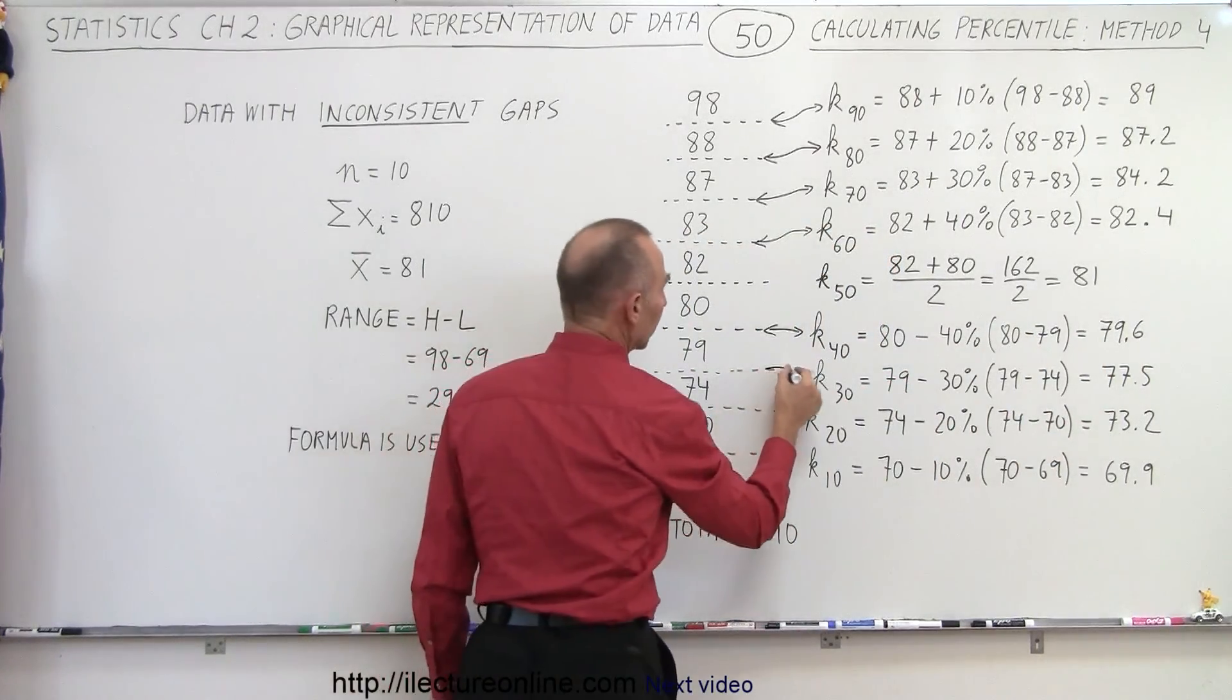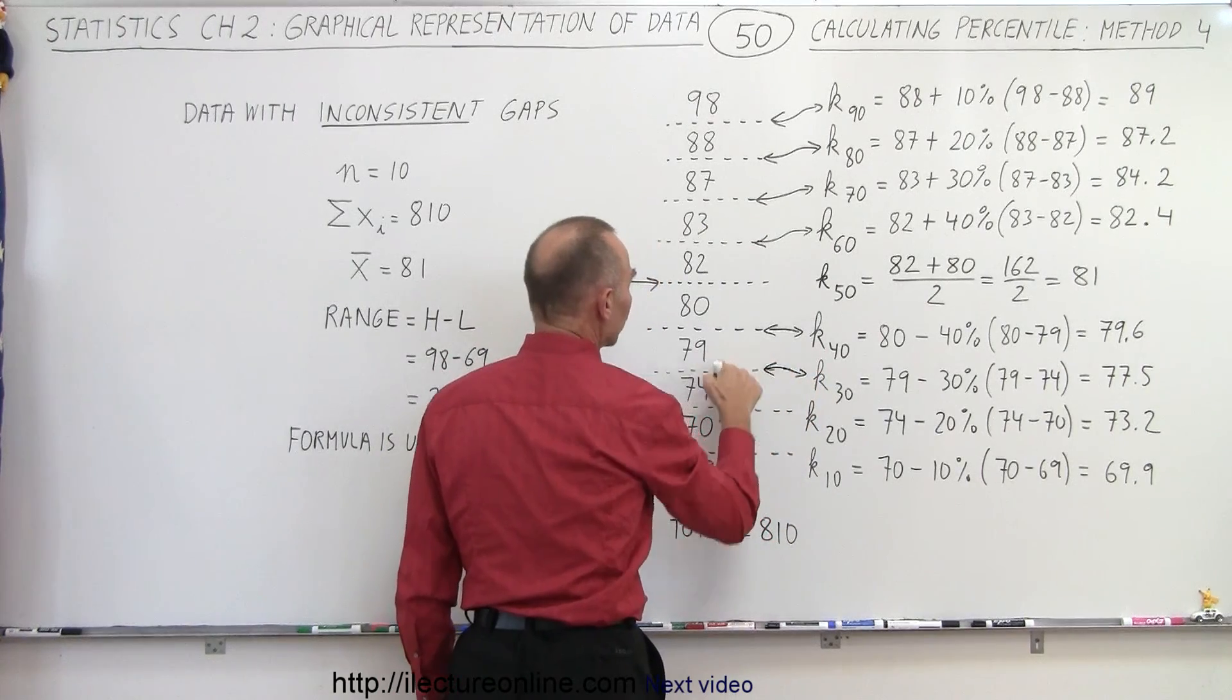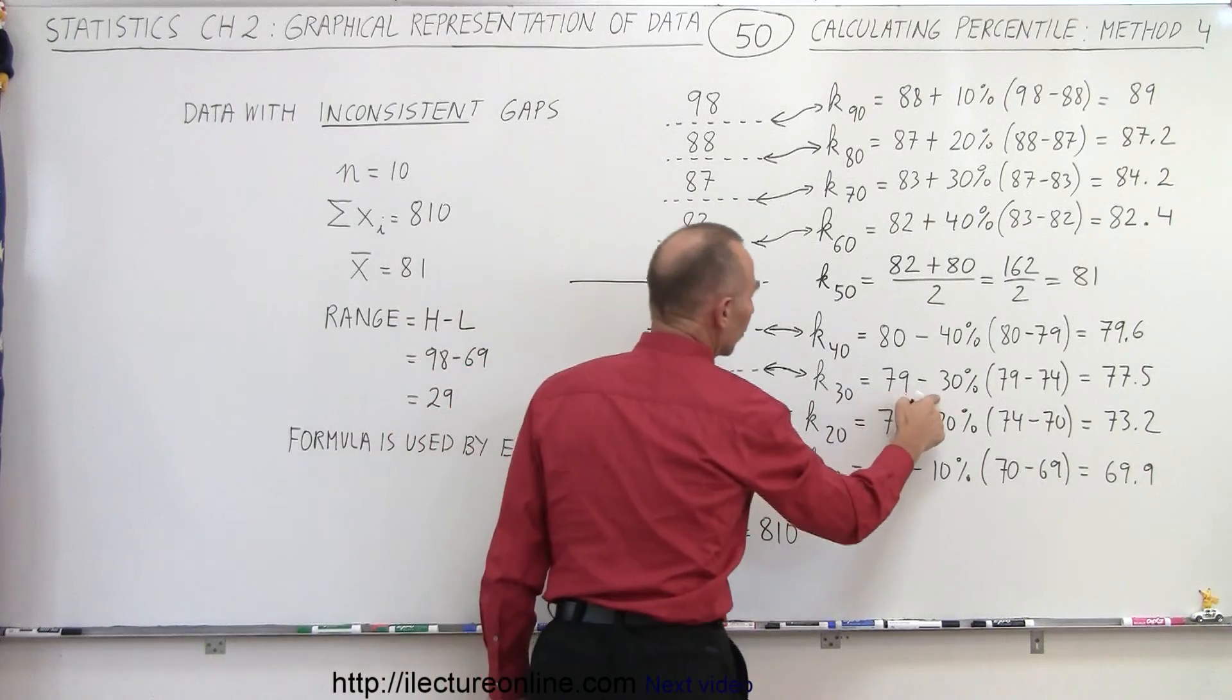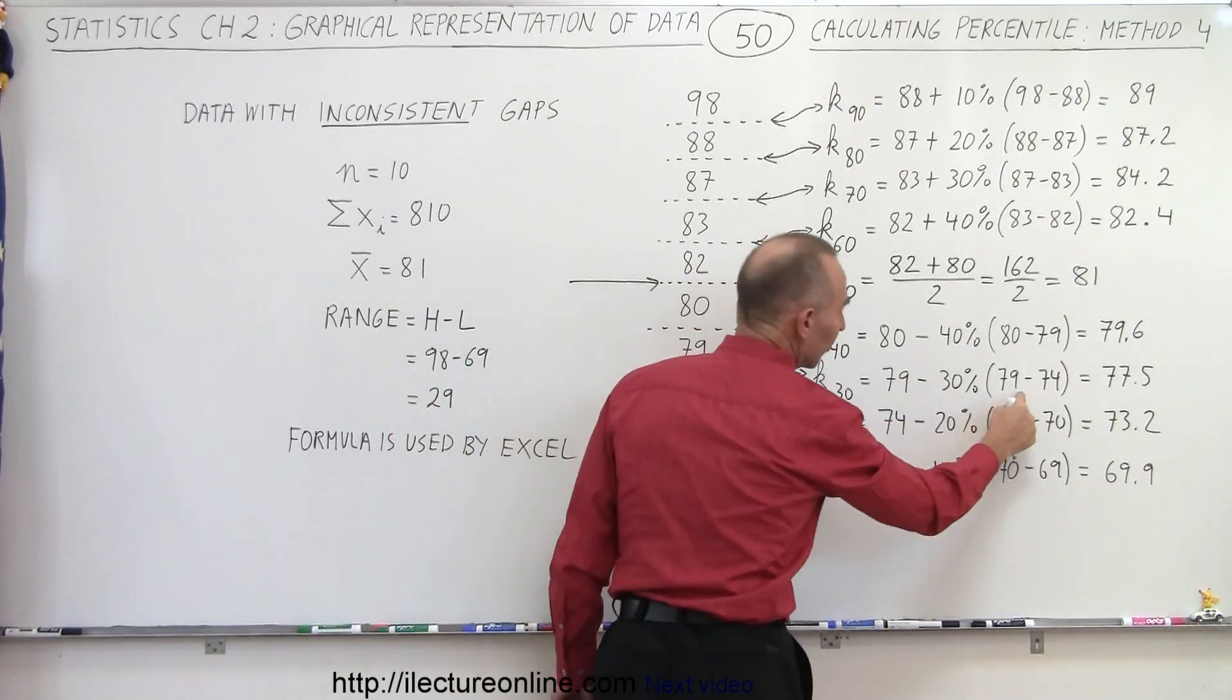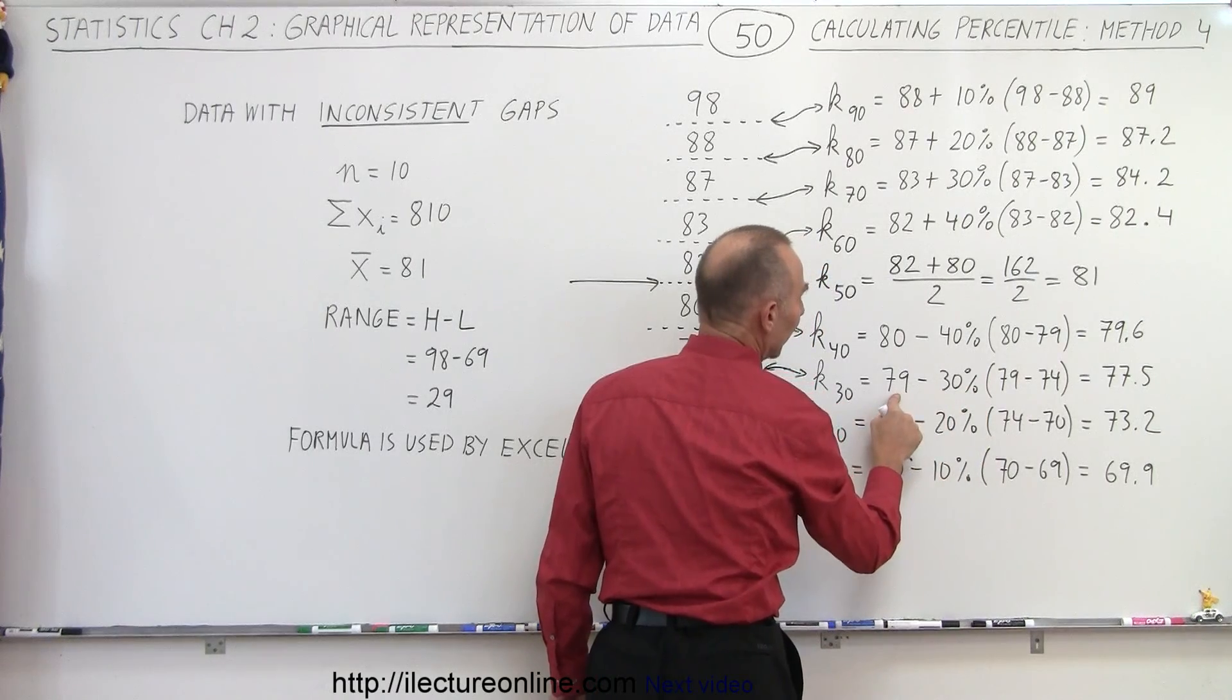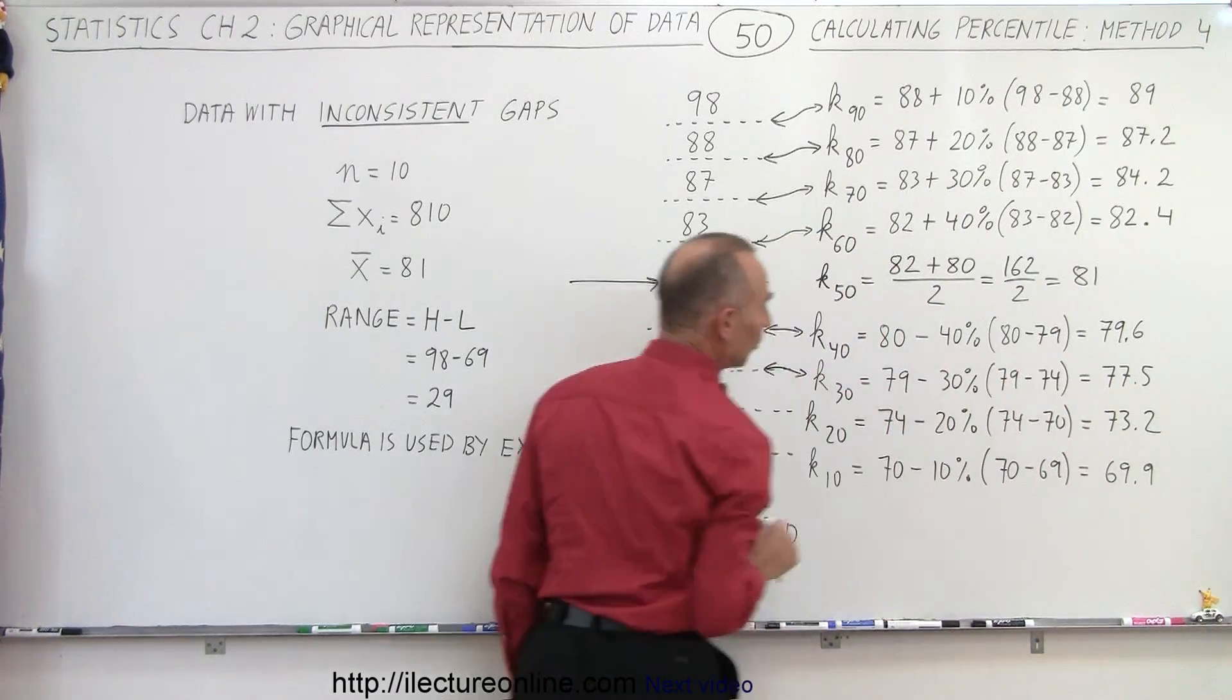To get the 30th percentile, we take the larger of the two values across the boundary. We subtract 30% of the difference. The difference is 5. 30% of 5 is 1.5. Subtract 1.5 from 79, we get 77.5.